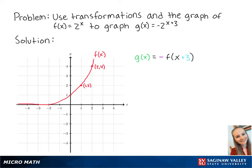g of x is equal to negative f of x plus 3. The negative function means that we'll be reflecting the graph across the x-axis. So our new points are at 1 negative 2 and 2 negative 4.